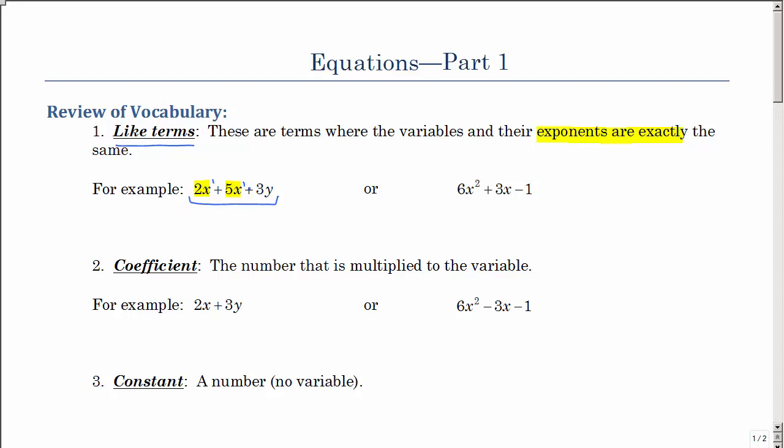And so we can combine those like terms and say if I have 2x plus 5x, that's 7x, and then I would just bring down or keep the plus 3y. Are there any like terms here? No, because even though they both have x's, one is raised to the second power and one is raised to the first power. So there are no like terms and you would just leave it like this.